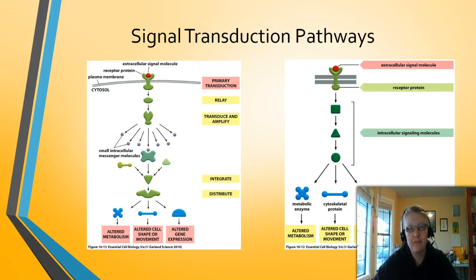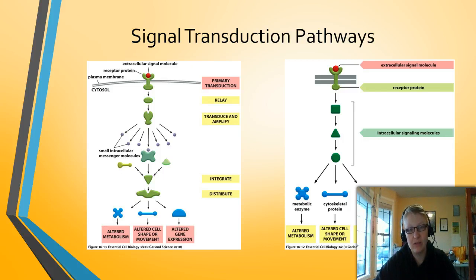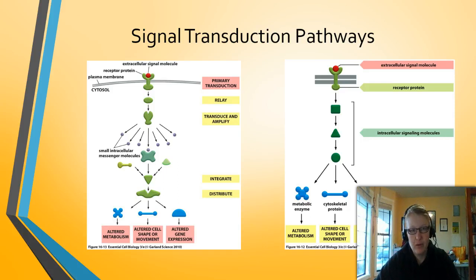The signal transduction pathway has five main components. First, the signal is received. Then the receptor is activated and relays the message through intracellular signaling molecules. Those intracellular signaling molecules pass the signal further along. Then effector proteins are turned on, which create the cell response. Any of these responses can correspond to the four functions: relaying, transducing or amplifying, integrating, or distributing. There are five steps with four possible functions — make sure you understand both diagrams and what they're telling you, as this is a big part of the topic.